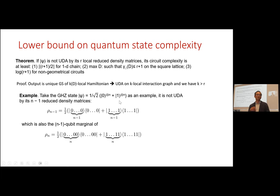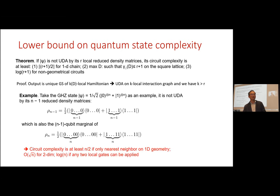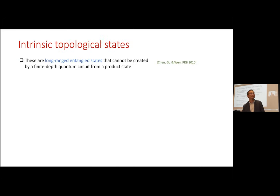This GHZ lower bound matches the optimal construction: start with one qubit in superposition, then apply CNOT gates left and right simultaneously, achieving the GHZ state in n/2 layers. So the lower bound is tight. For symmetry-protected topological states, which are short-range entangled and can be created by short-depth circuits, they fit within our framework and their K-local marginals uniquely determine them. UDA turns out to be an interesting property of short-range entangled states.